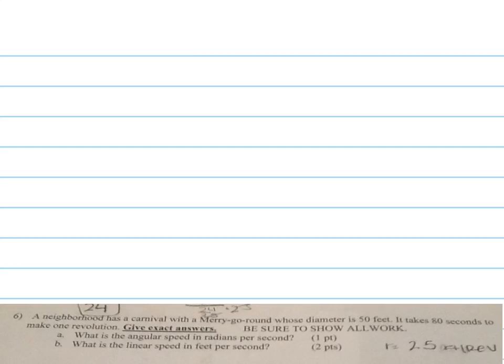Let's do some angular speed stuff. A neighborhood has a carnival with a merry-go-round whose diameter is 50 feet. I'm going to do this without using formulas. I'm just going to use logic. 50 feet diameter. So there's my diameter. That's 50.